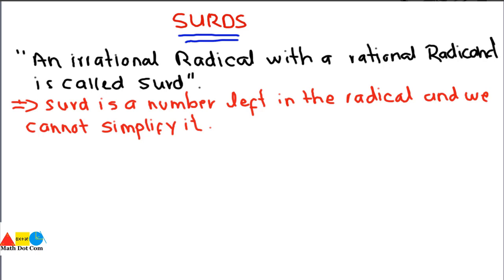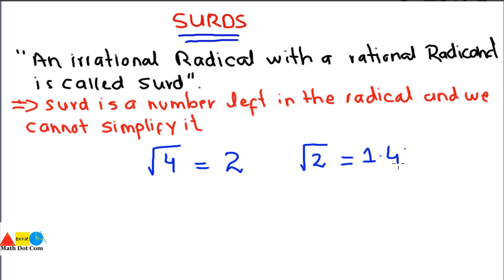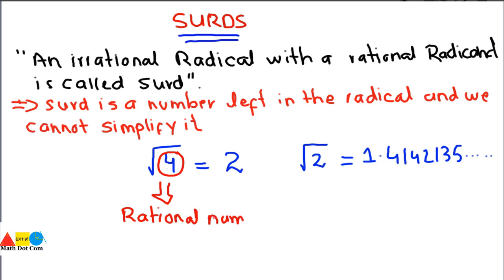For example, let's start from some examples so the definitions become clearer. If I ask what is equal to the square root of 4, the answer is 2. And if I ask what is equal to the square root of 2, the answer is 1.4142135 and so on. This means that square root of 4 gives a definite value of 2, so it is a rational number — not going on forever without repeating itself.